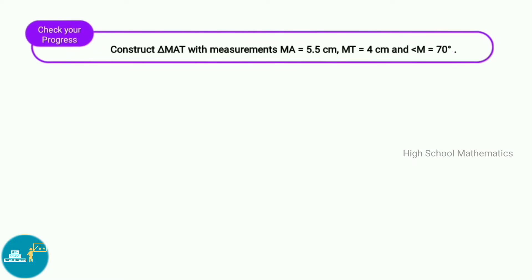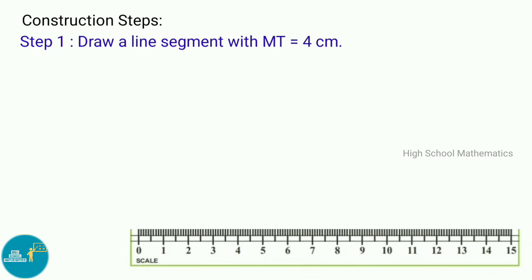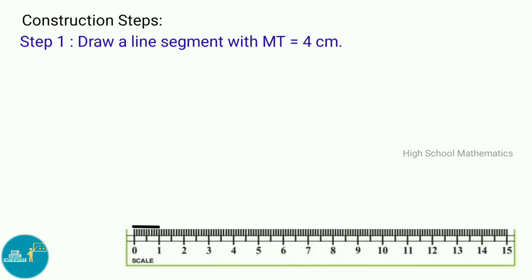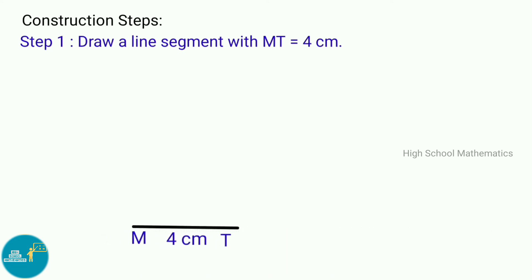Check your progress: Construct triangle MAT with measurements MA equal to 5.5 centimeters, MT equal to 4 centimeters, and angle M equal to 70 degrees. Construction steps — Step 1: Draw a line segment MT equal to 4 centimeters.